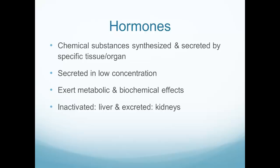Hormones are chemical substances produced by a specific tissue or organ in the body. They can stimulate that organ itself or stimulate another organ - they are either stimulators or repressors of certain bodily functions. Typically they're secreted in low concentrations because hormones have a very strong effect on the body. They have both metabolic and biochemical effects and are inactivated by the liver and excreted by the kidneys.